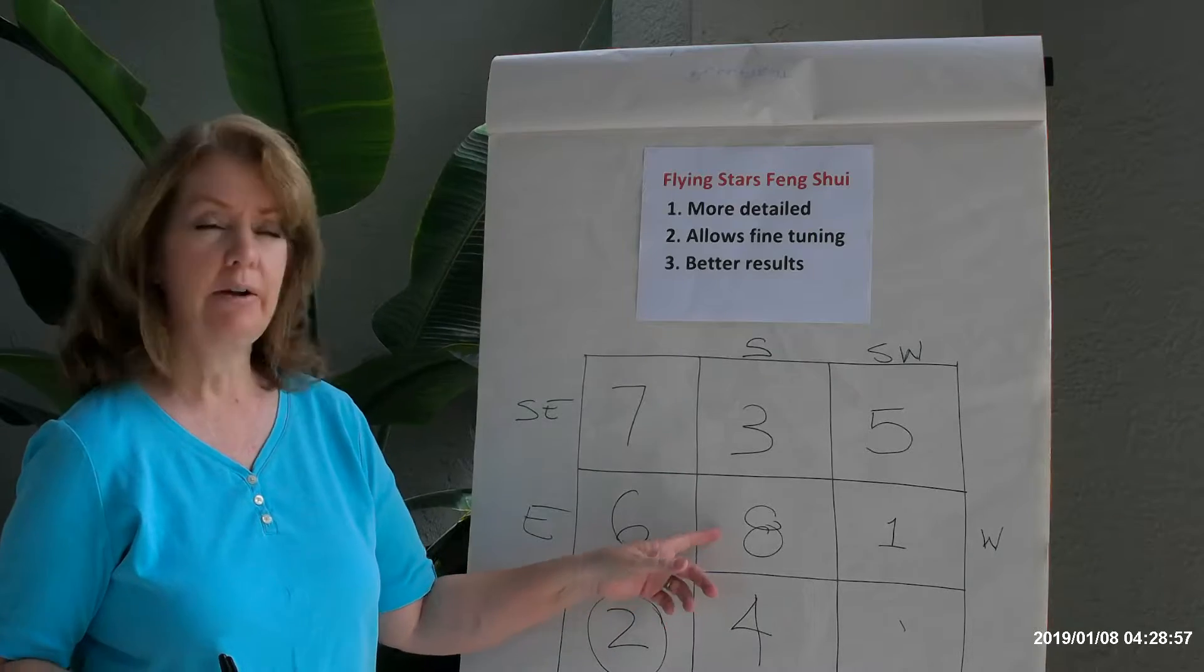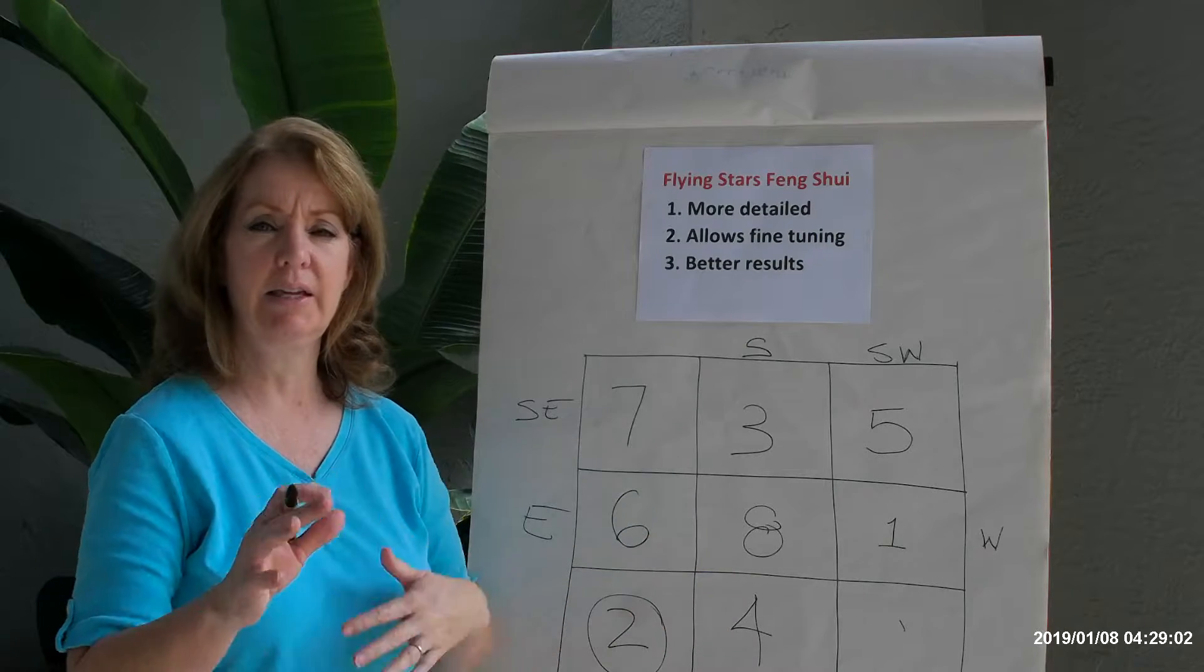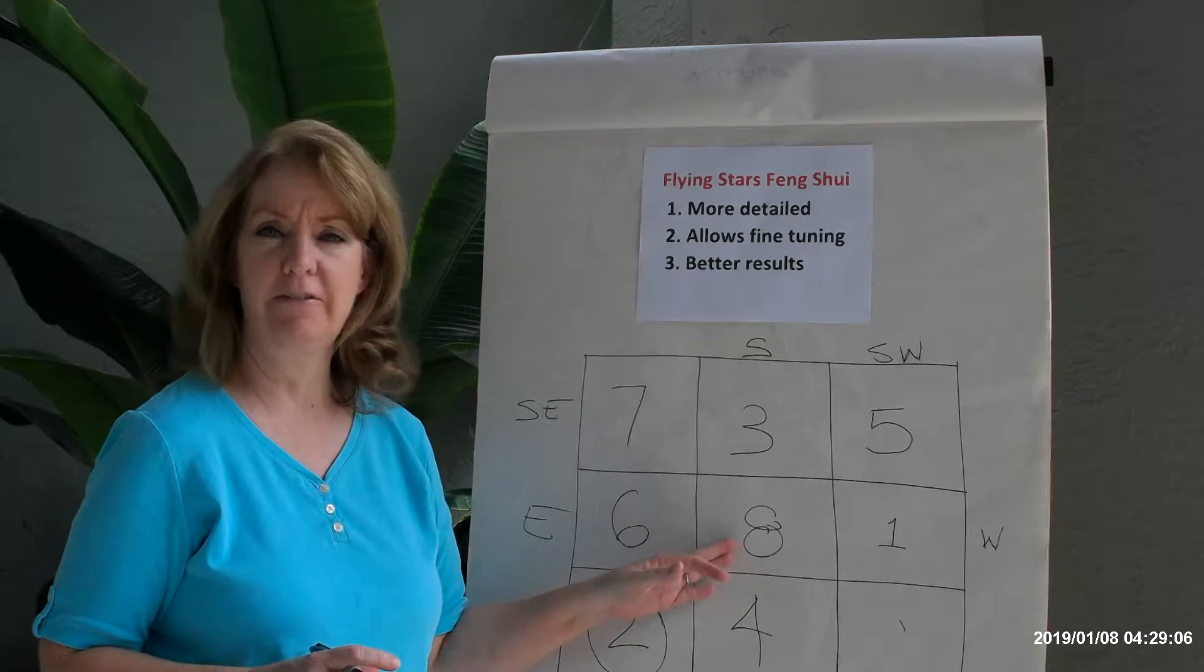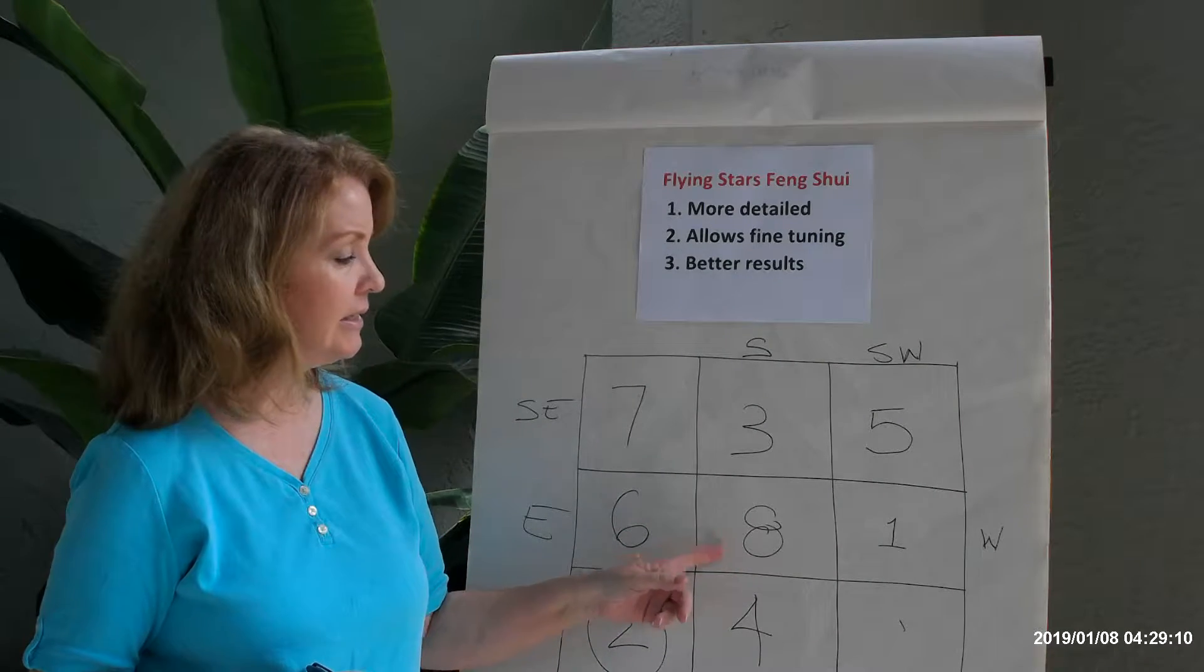The number eight represents things like spirituality, eternity, things that are long-lasting, things that are beneficial, helpful things to you, and it sits in the middle.